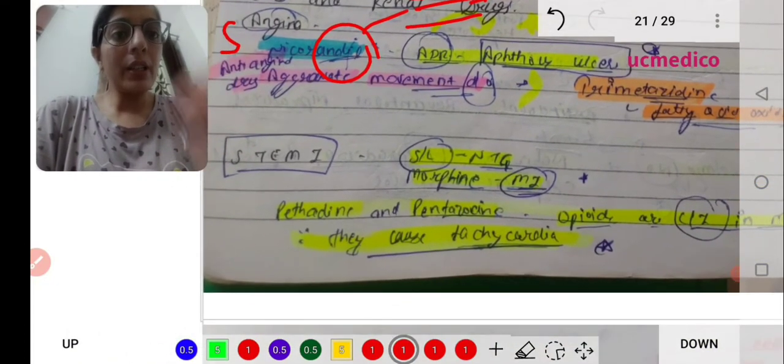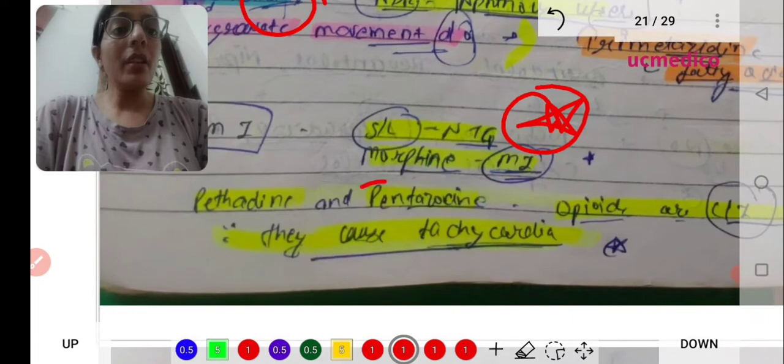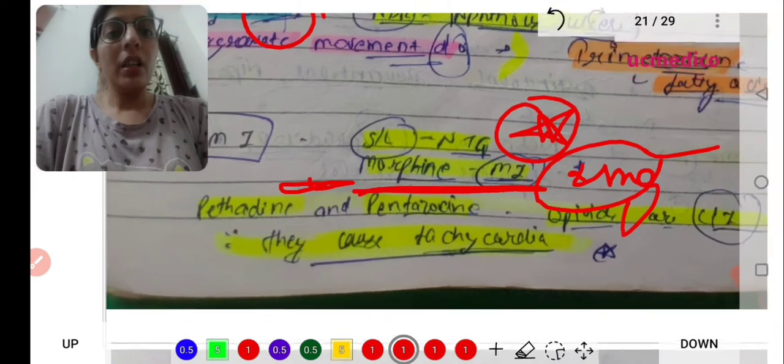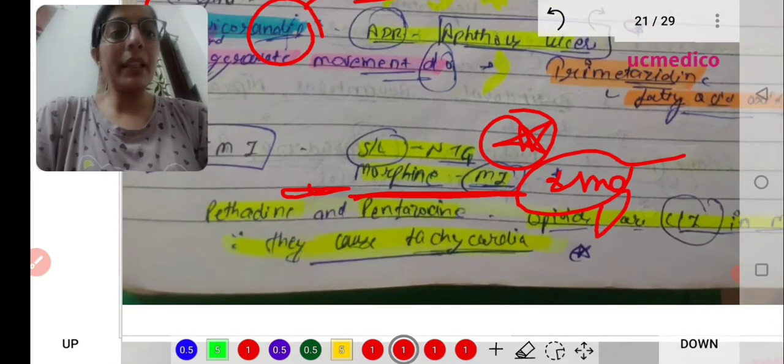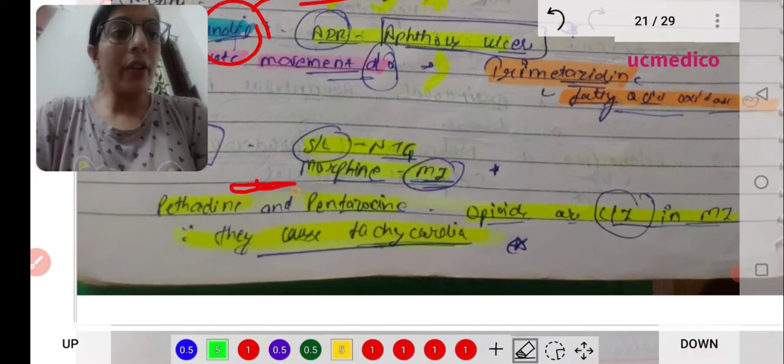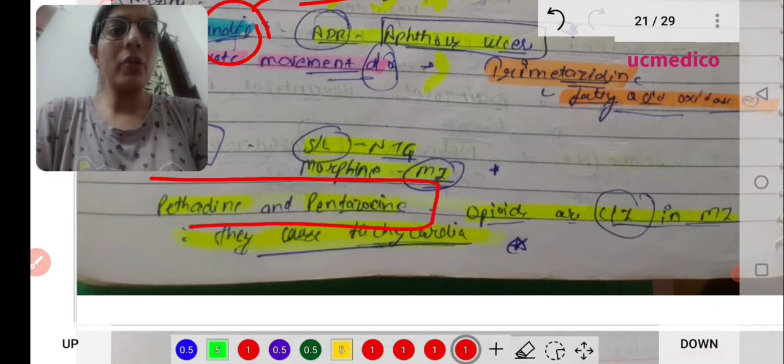Drugs used in ST-elevated MI - the most important is sublingual NTG. For MI we use morphine 2mg dose. Other opioids are pethidine and pentazocine. These opioid drugs are contraindicated in MI. Morphine is given, but pethidine and pentazocine are not given because they cause tachycardia.